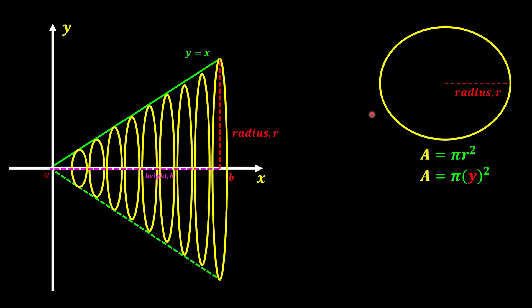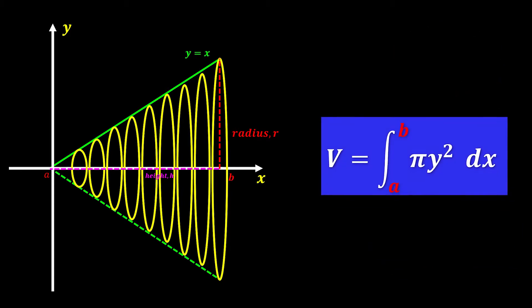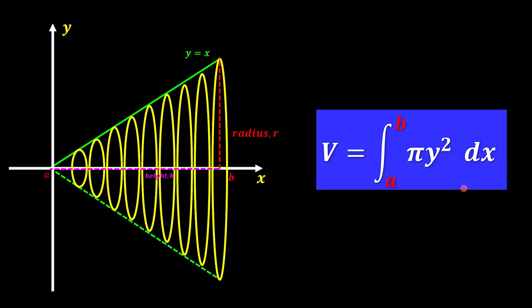This is only one circle, but we're going to fit a bunch of small circles. The best way to find the summation of all the areas of the circles is by using integration, because integration helps us sum up all the tiny small pieces. So the volume is just the integration from A to B of all the areas of the circles bounded to the x-axis. dx means we're rotating about the x-axis, and our area is pi y squared. And that is the formula for volume of revolution about the x-axis.